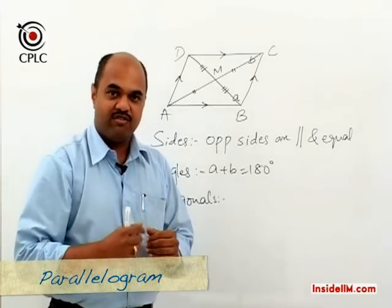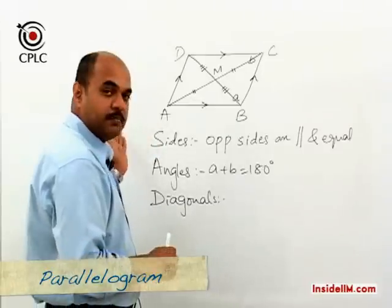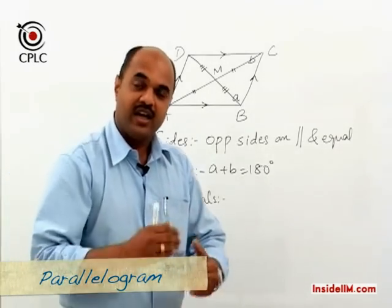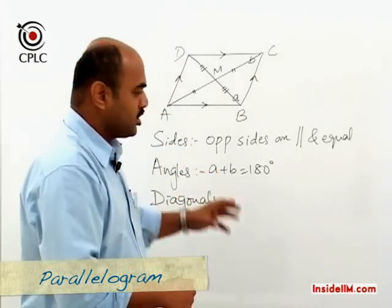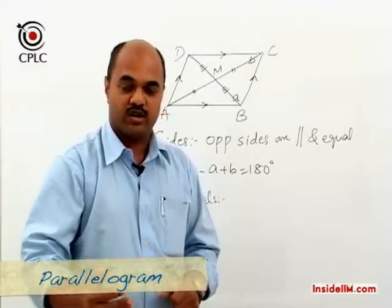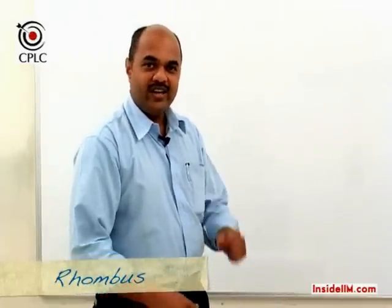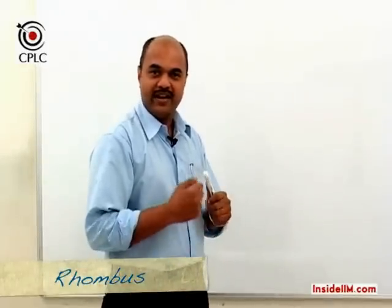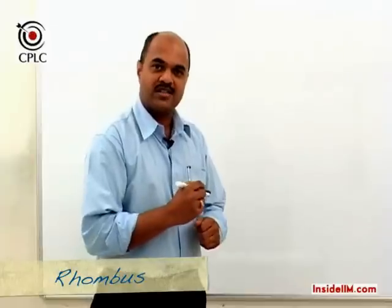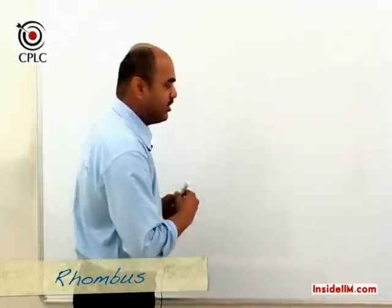In addition to these properties, if we have some additional properties, then we can classify the parallelogram as a rhombus, rectangle, or square. Let's move on from a parallelogram to a rhombus. In a parallelogram, if adjacent sides are equal, then automatically all sides become equal, and in such a case the parallelogram gets converted into a rhombus.